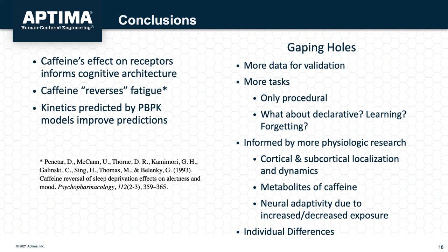In conclusion, the major findings of this work are: first, that caffeine's effect at the synaptic level can inform modifications to cognitive architectures to account for their effects. Others like Terry Stewart and Andrea Stokho have been showing similar things for years. However, it's good to see that such data can also inform modeling cognitive moderators like caffeine and the integration of established models of physiology and cognition. Second, the modeling supports findings that caffeine effectively reverses the effects of fatigue, consistent with other research such as Penetar et al. using sleep onset and questionnaire results. Finally, we found that including physiologically valid models of caffeine kinematics can improve cognitive model predictions.